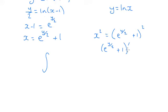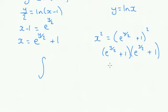So I'm going to write it out twice and expand it out. So we're going to get e to the y over 2 times e to the y over 2, which is going to be e to the 2y over 2, which is just e to the y. Plus e to the y over 2 times 1, plus another e to the y over 2 times 1. So that's going to be 2 e to the y over 2, and then plus 1 times 1.